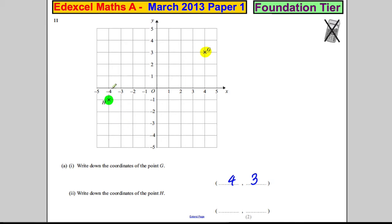Go along first, negative 4, and then go down, negative 1. So negative 4, negative 1.